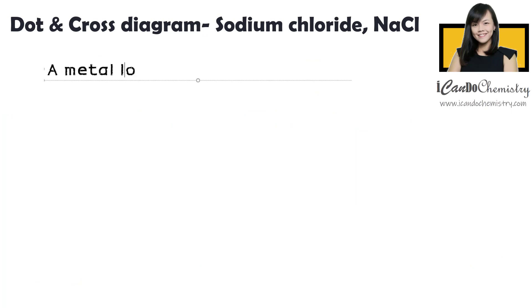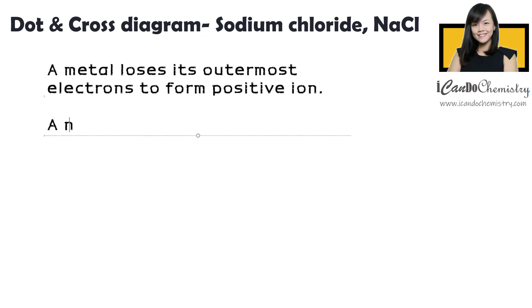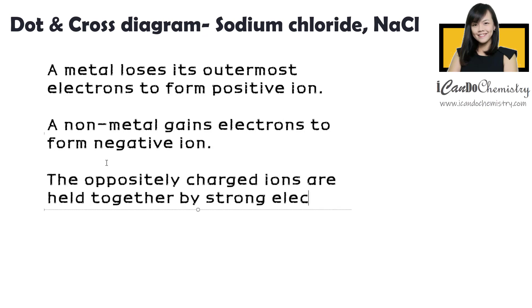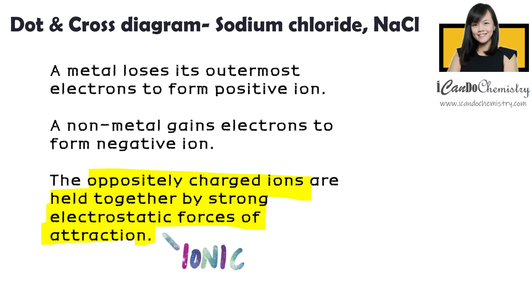In a nutshell, a metal loses its outermost electrons to form positive ion, while a non-metal gains the electrons to form negative ion. The oppositely charged ions are held together by strong electrostatic forces of attraction, which we call the ionic bond.